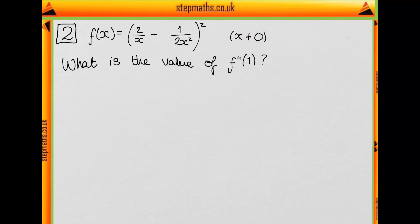Again, x is not equal to 0 because we'd then be dividing by 0, which we can't do. And we want to know what the value of f double prime of 1 is.